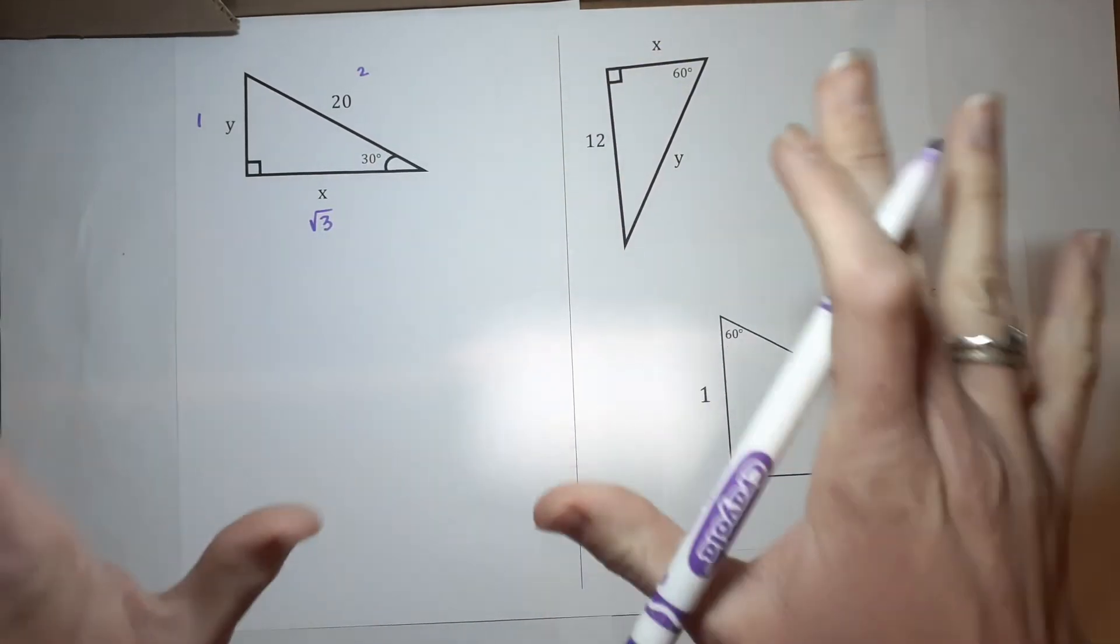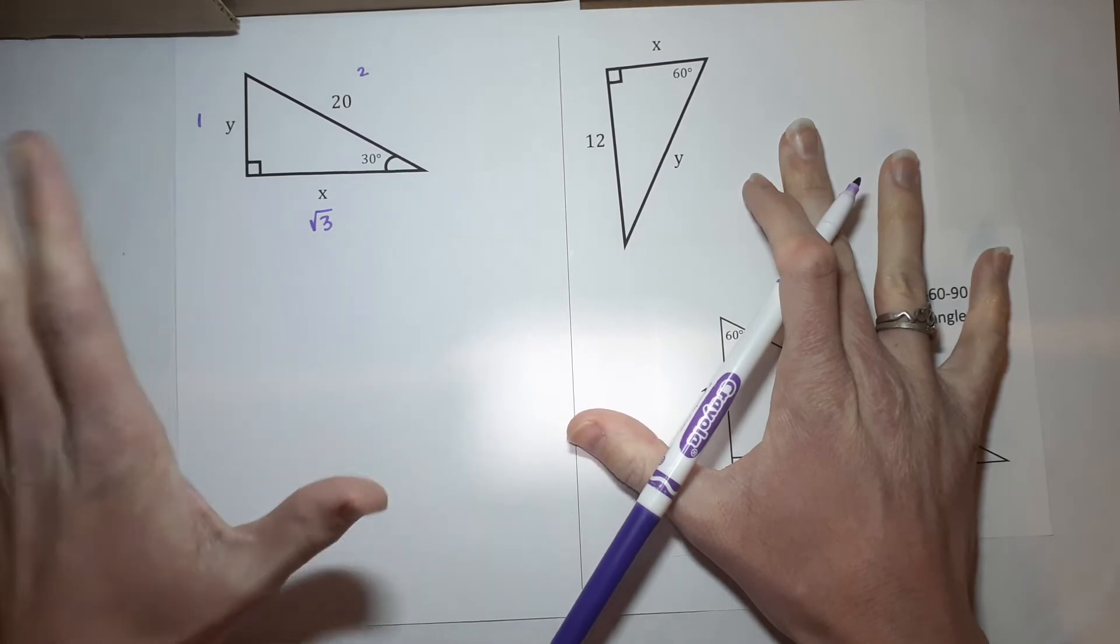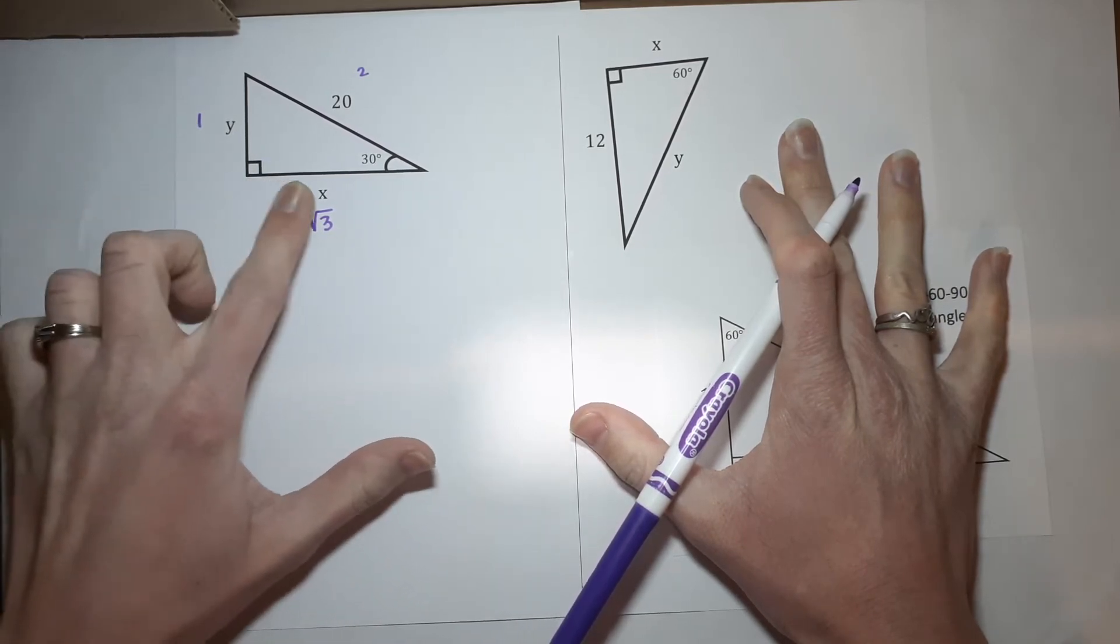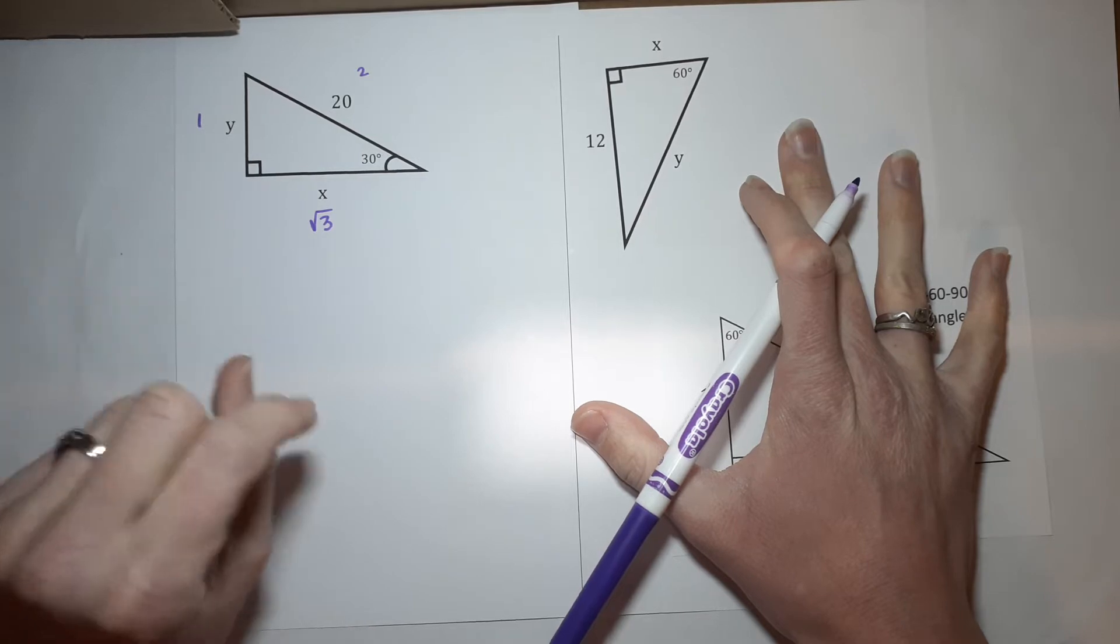Now, this doesn't mean X equals the square root of 3 or Y equals 1. We just know they're related to those numbers. These numbers are going to help us find what X and Y are.